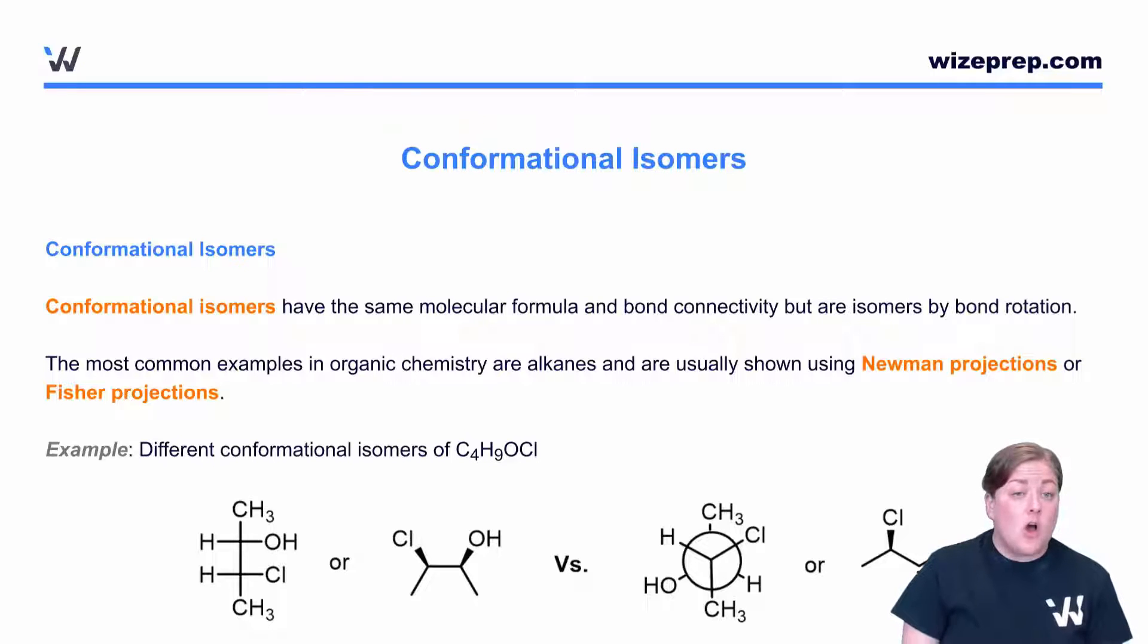The next type of isomer is going to be a conformational isomer. Conformational isomers have the same molecular formula and bond connectivity, but differ by bond rotation. So what we're going to see here is carbon-carbon single bonds being able to rotate.